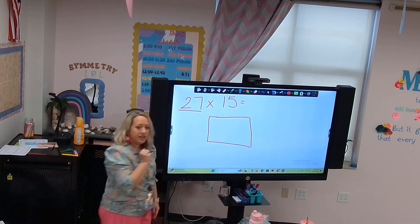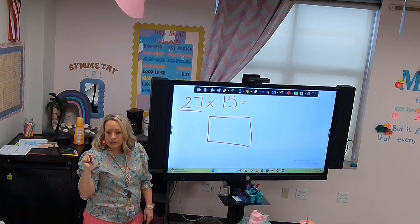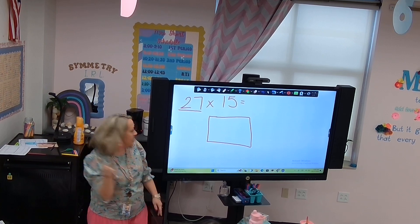Step two, break them into expanded form. What am I breaking 27 into, cutie pie with a Nike shirt? 27. 20 and? 7. Good job.